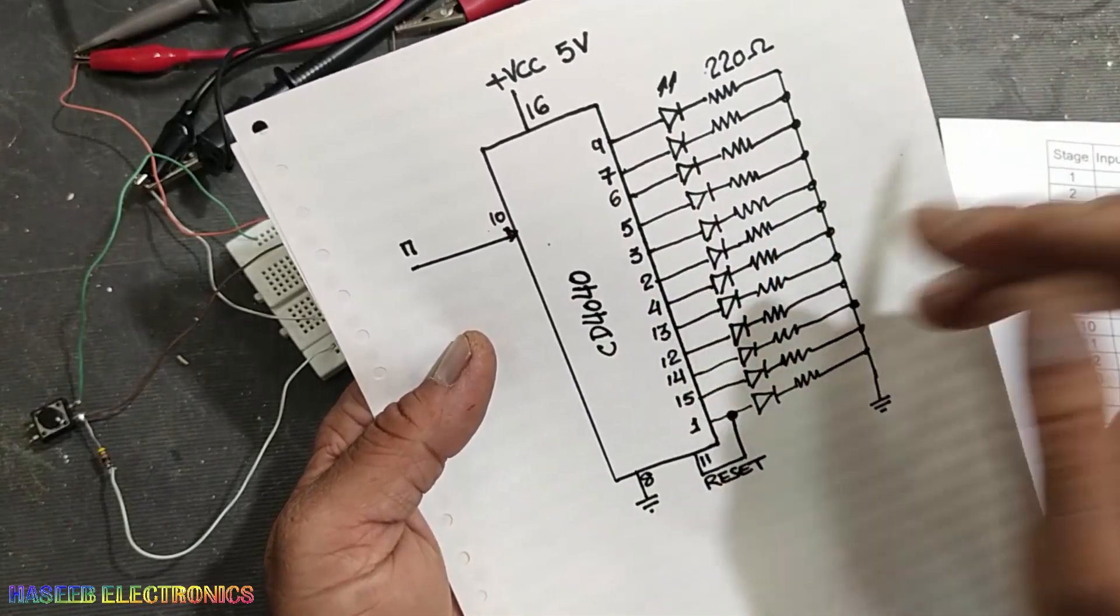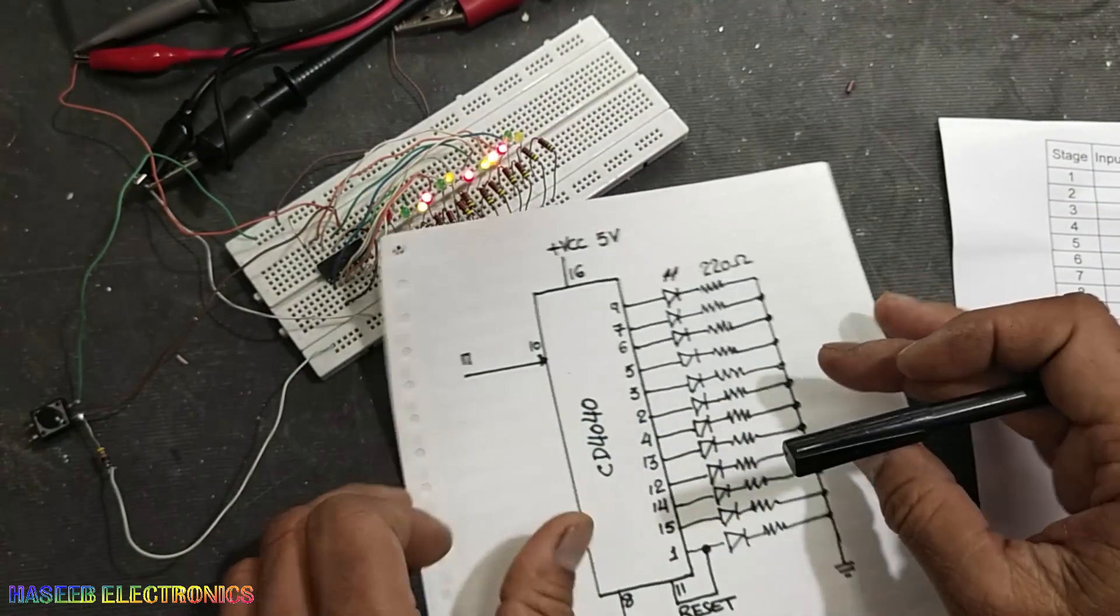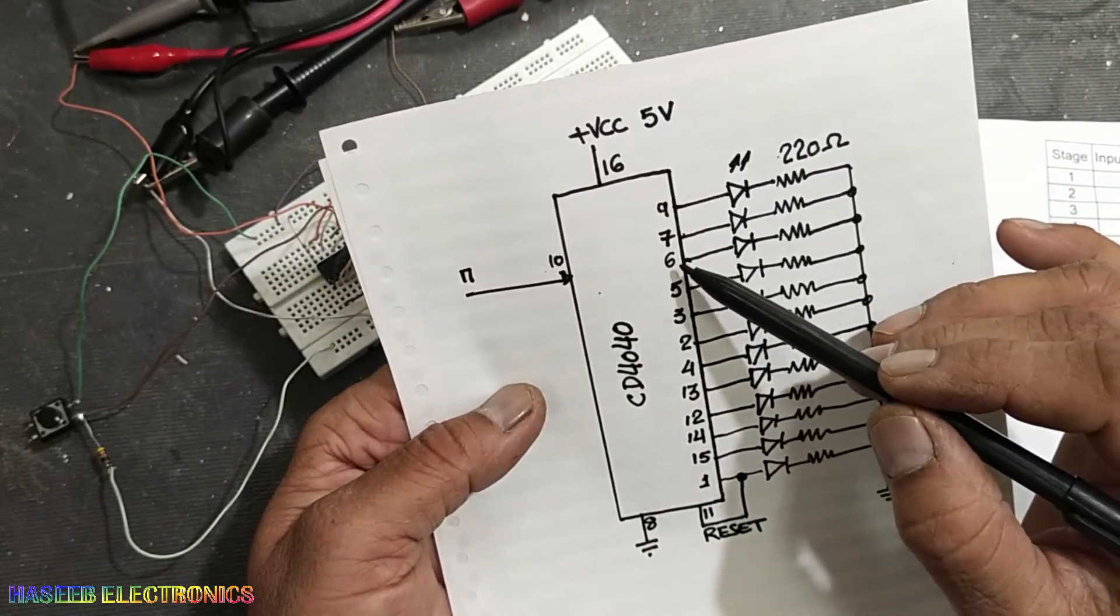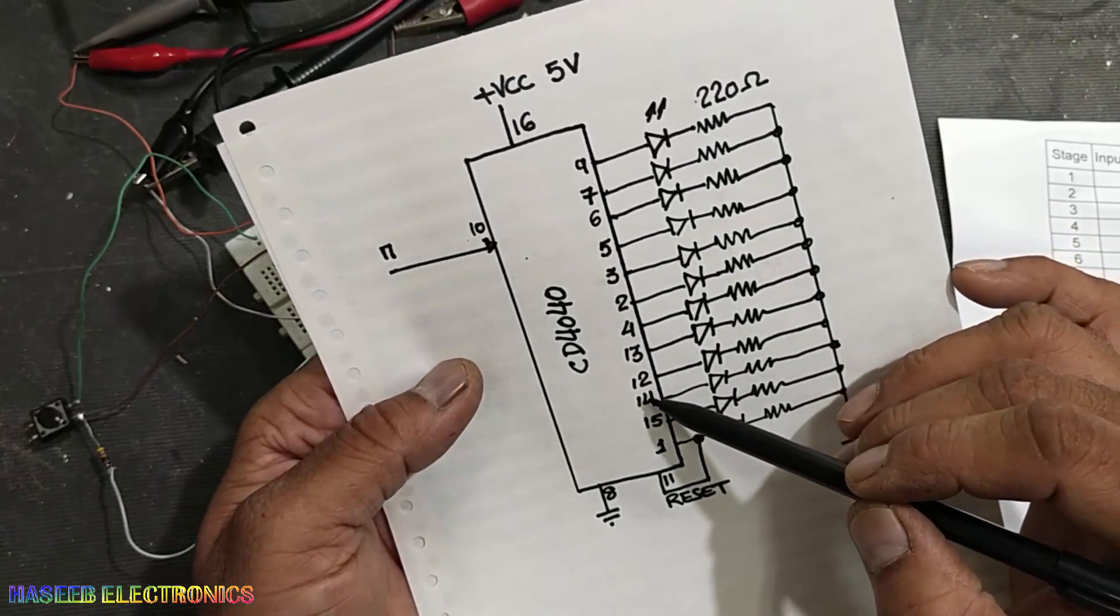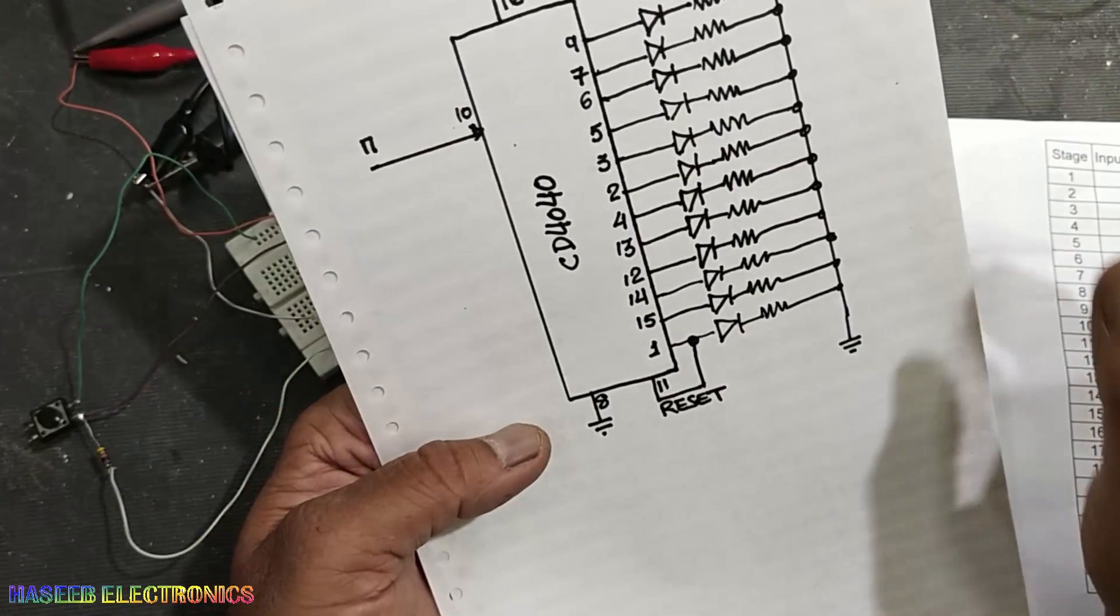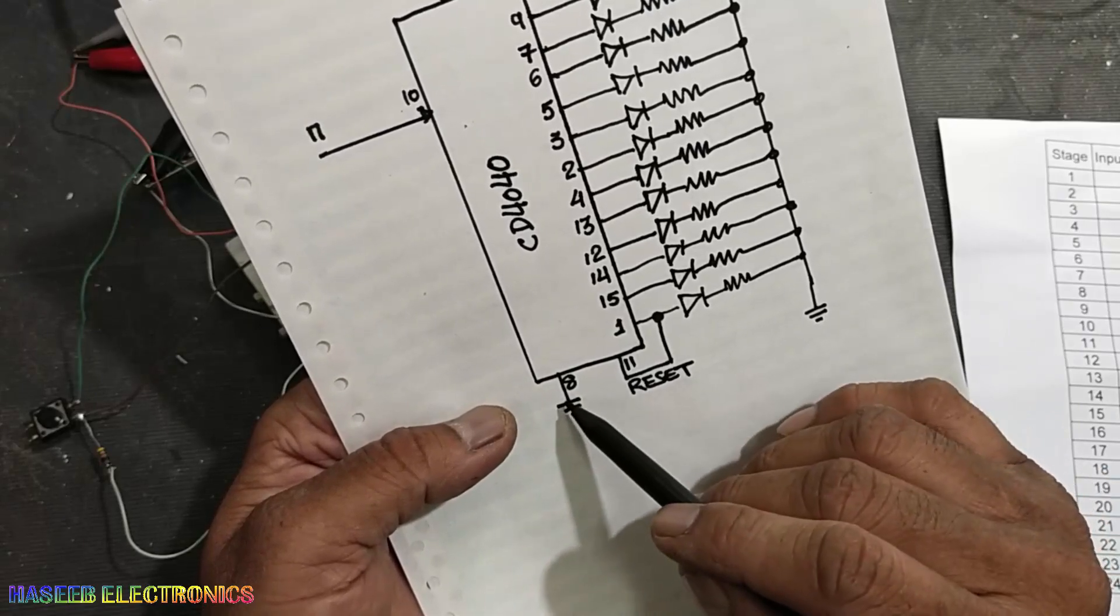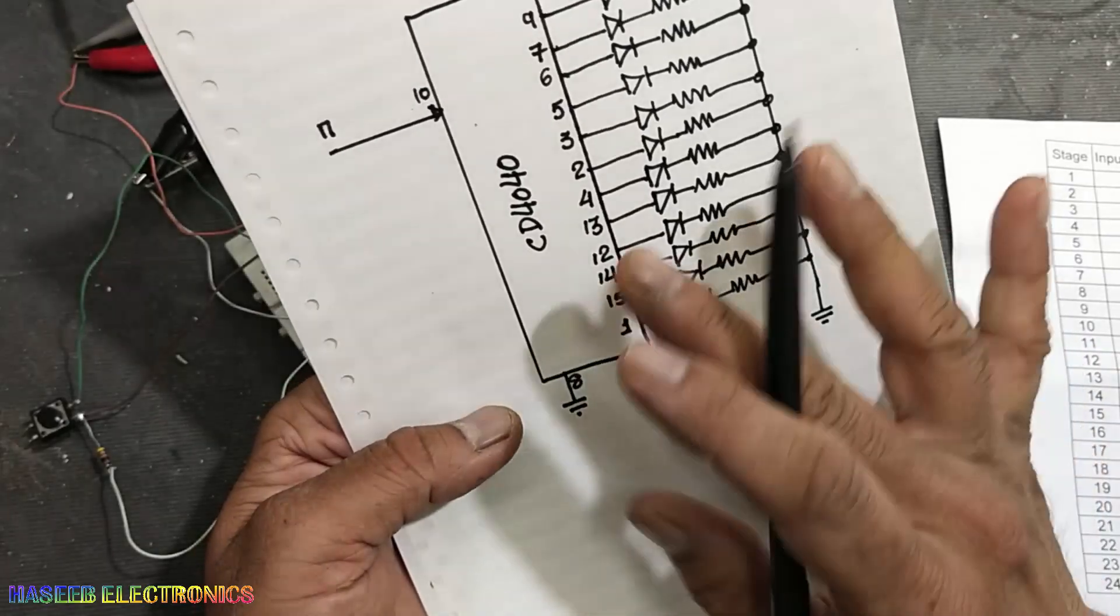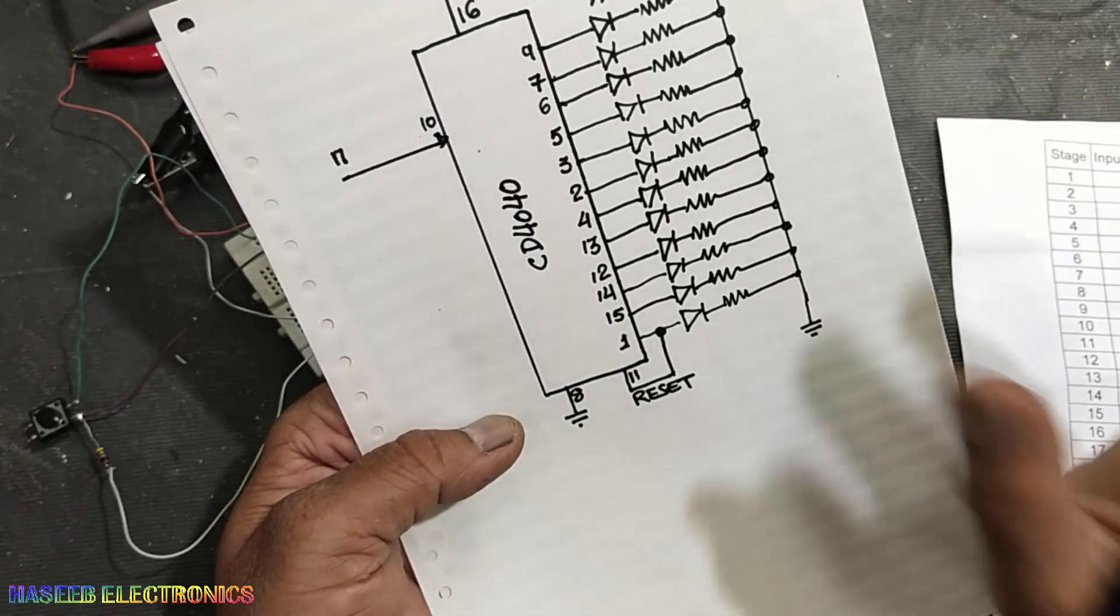In CMOS technology and TTL ICs, when the word Q is used, that means it is output number one. So Q1, Q2, Q3, Q4, Q5, Q6, 7, 8, 9, 10, 11, and 12 - it has 12 outputs. Normally pin number 11 is connected to ground to activate this IC. To enable this IC, pin 11 must be grounded. Anytime it goes high, it will reset the circuit to 000.